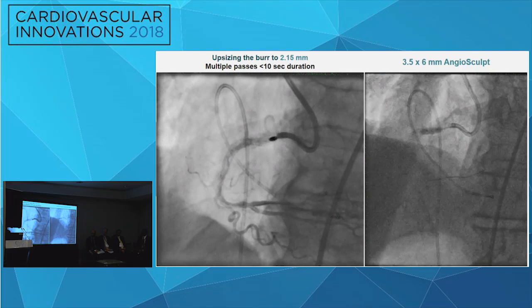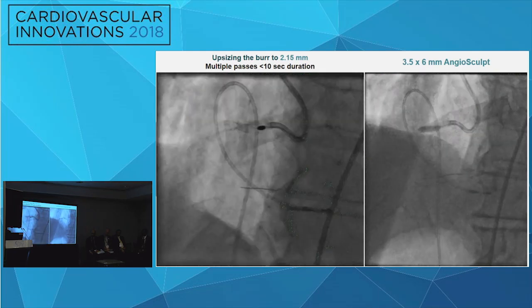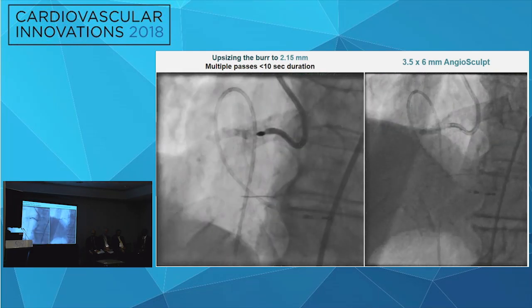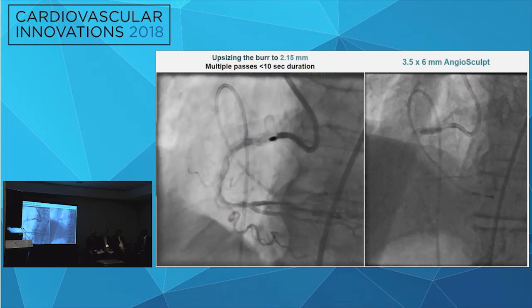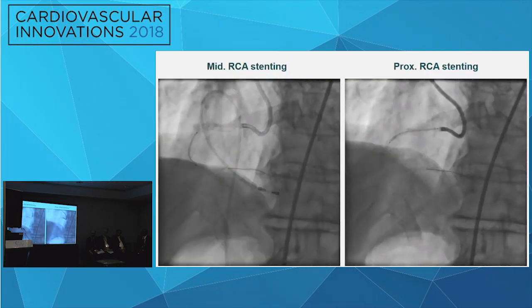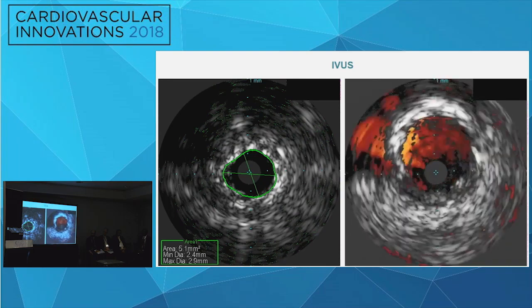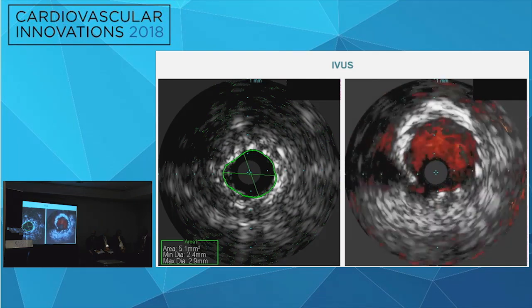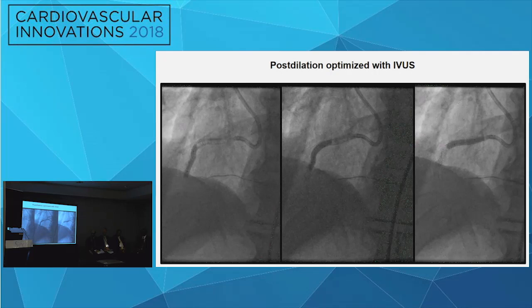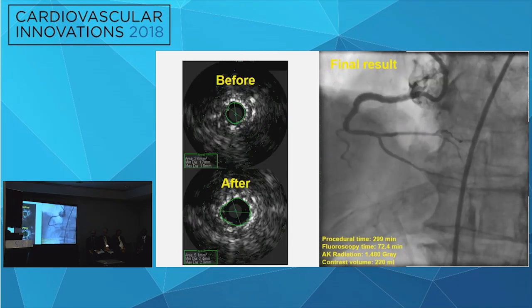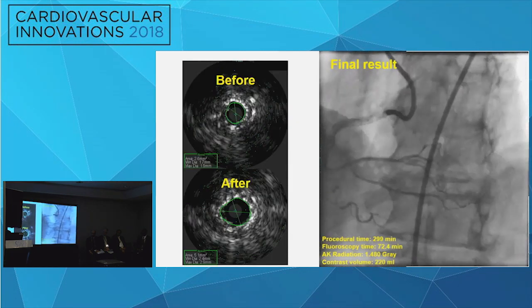We finalized our results with a 3.5-millimeter diameter angiosculpt scoring balloon with its spiral cutting blades and were able to achieve an MLA of 5.1. Finally, we optimized our results with post-dilation controlled by IVUS, achieving an excellent final angiographic result.